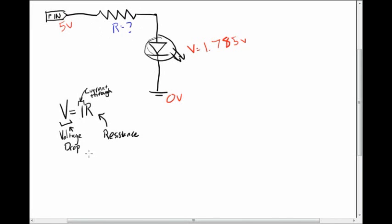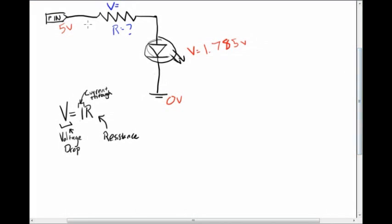So for the resistor, we first have to find out what the voltage drop is. We know that overall over the whole circuit, the voltage goes from 5 volts to 0 volts. 1.785 volts is lost over this portion of the circuit. So we must have lost 3.215 volts over the resistor, because this number here plus this number here must equal 5 volts. You lose 5 volts in the whole circuit. You've lost this much here. This is the difference.